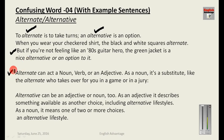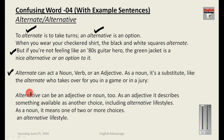Alternate can act as a noun, verb, or adjective. As a noun it is a substitute — like the alternate who takes over for you in a game or on a jury. We normally say 'Do you have an alternate number?' Alternative can be an adjective or a noun. As an adjective it describes something available as another choice, such as 'alternative lifestyle.' As a noun it means one of two or more choices.